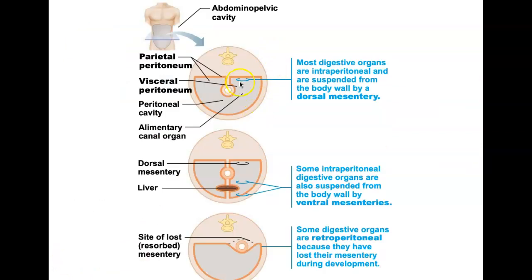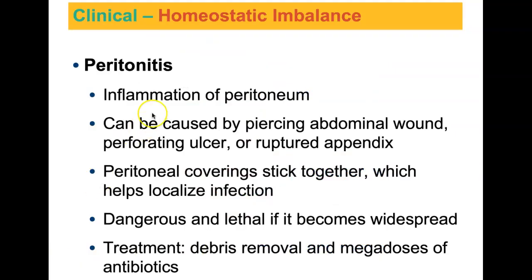Here's another image from your textbook with more details. During development, some digestive organs are going to be retroperitoneal — they lie outside of the peritoneal cavity. Kidneys are a good example, and some of the large intestine and lower pelvic portions are also retroperitoneal. We can also have inflammation of the peritoneum, caused by a wound piercing the abdominal cavity wall, a stomach ulcer, or a ruptured appendix. This can be dangerous if widespread because bacteria can infect all of your digestive organs within the intraperitoneal space.